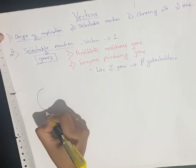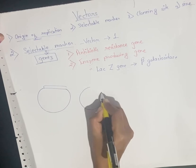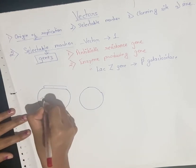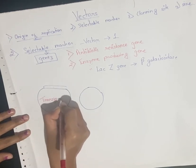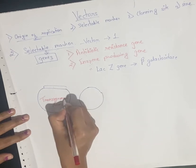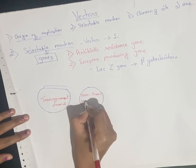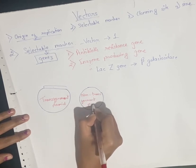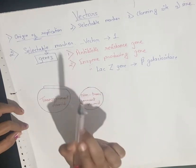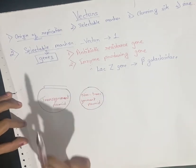For example, there is a plasmid with alien DNA and another plasmid without it. The plasmid with alien DNA is called the transformant plasmid, and the other is the non-transformant plasmid. To identify the plasmid with our gene of interest, selectable markers are used — how that process works will be covered in the next video.